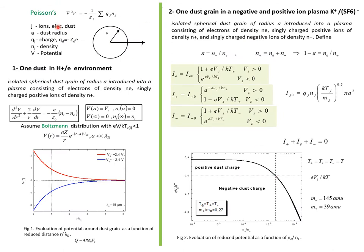To study the electrostatics, we start by the Poisson equation relating the electrostatic potential to the density of charge population existing in the space. We have studied two systems. The first one is formed by an isolated spherical dust grain of radius A introduced into a plasma consisting of electrons of density n0 and singly charged positive ions of density n+. In the spherical geometry, the Poisson equation takes this form.